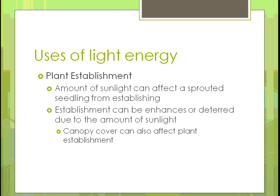For plant establishment, the amount of sunlight can affect whether a sprouted seed leaf successfully establishes. Without enough sunlight, the seedling may not initiate growth into a full plant. Establishment can be enhanced or deterred based on sunlight levels, which depends on the plant type — some require more sun than others. Canopy cover from a forest, or even artificial screening like a hoop house or greenhouse with whitewash, can affect establishment based on how much sunlight reaches the plant.